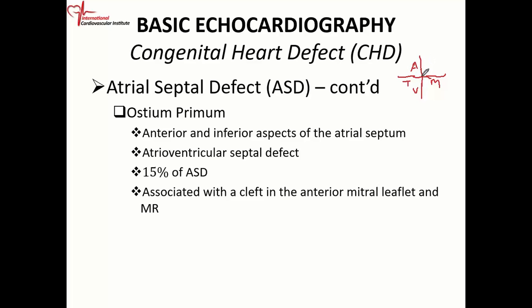You can have a partial endocardial cushion defect where, instead of the septum coming straight down to meet the AV plane, it stops short. So you have your atrial septum but it stops short of coming down to the AV plane, leaving a defect.